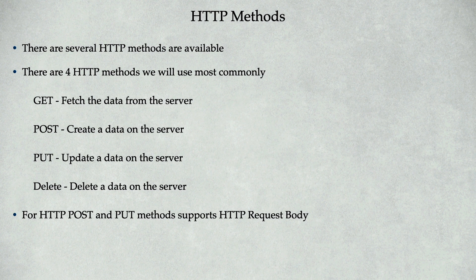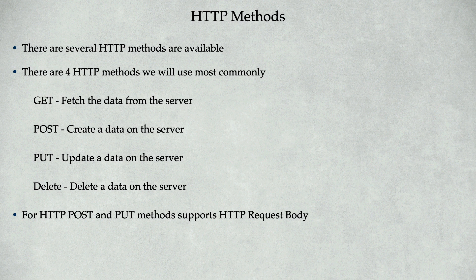Each REST endpoint contains an HTTP method. There are 10 to 11 HTTP methods available, but four are the most commonly used. These HTTP methods are used to perform the basic database operations — Create, Read, Update, and Delete — which is CRUD. The HTTP GET method fetches data from the server. The HTTP POST method creates data on the server. The HTTP PUT method updates data on the server. The HTTP DELETE method deletes data from the server.